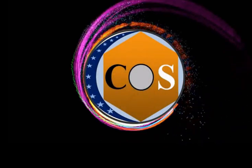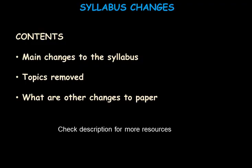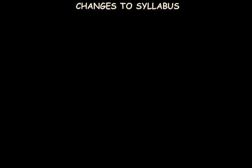In this video we will see what are the main changes made to the syllabus of 2022-24 for 9701 AS level chemistry, what topics are removed from the syllabus, and what changes are made to the papers in particular. Let's first start with the changes made to the syllabus.